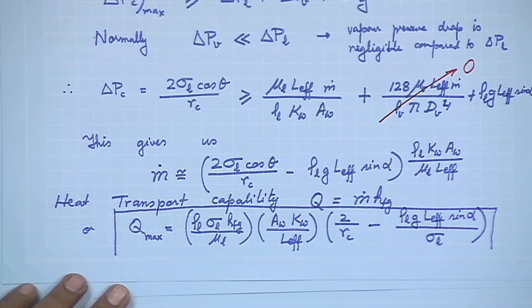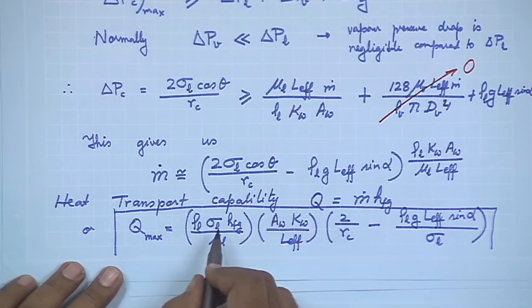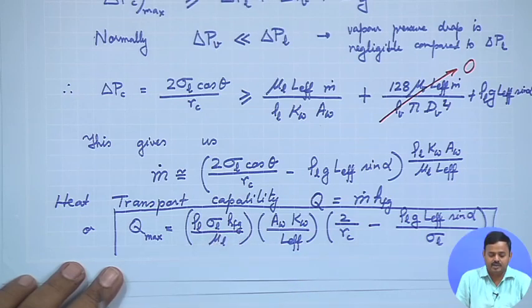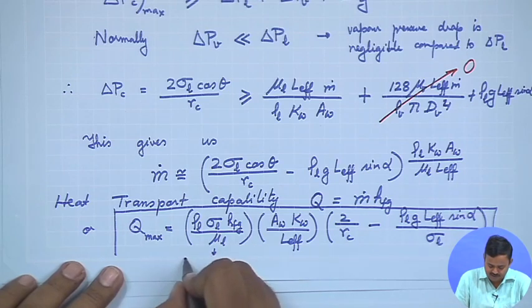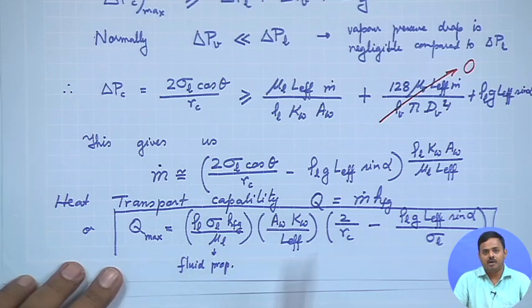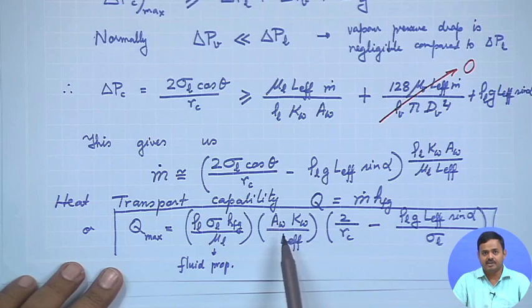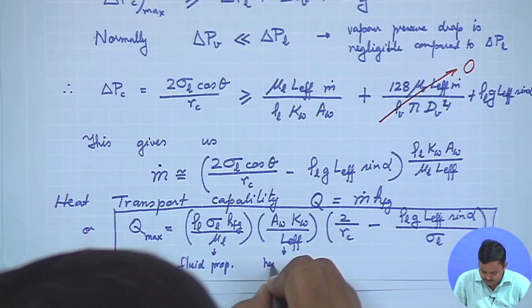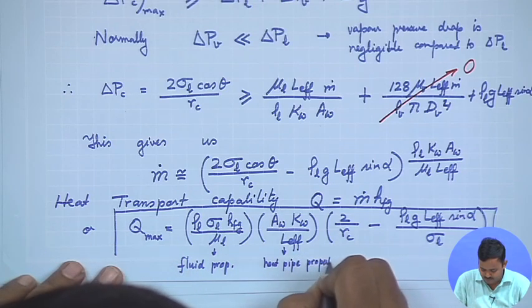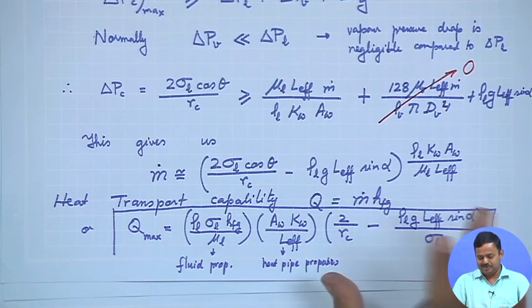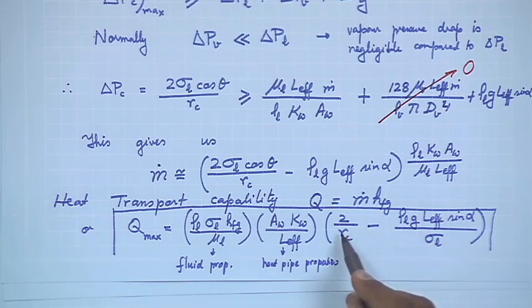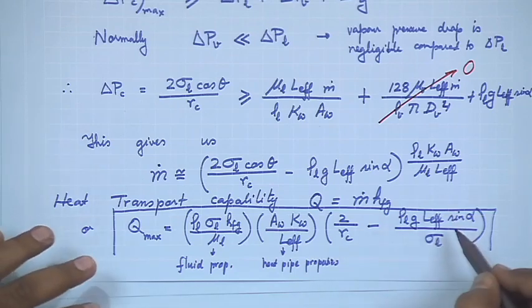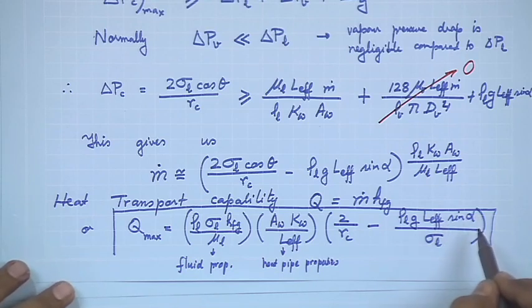This is a very nice expression. Looking at the first parenthesis: ρ_l · σ_l · h_fg / μ_l — these are all fluid properties. The second group, A_w · k_w / L_eff, contains the wick area, wick permeability, and effective length of the heat pipe — these are heat pipe wick and geometry properties. The remaining term involves a combination of fluid properties and geometric properties.